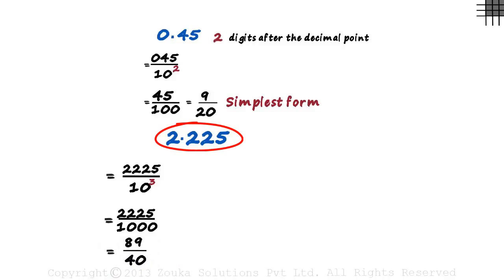And that will equal 2225 by 1000, and this can be reduced to 89 by 40. So we wrote 2.225 as 89 by 40. That was simple.